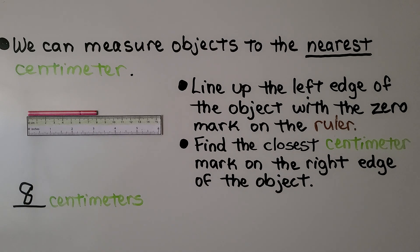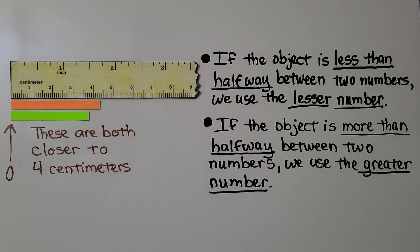If the object is less than halfway between two numbers, we use the lesser number. And if the object is more than halfway between two numbers, we use the greater number.